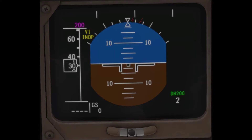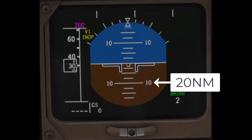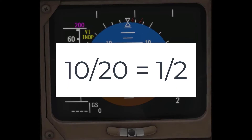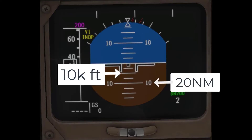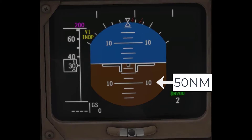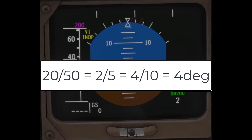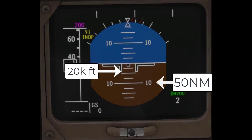For example, if we had 20 miles to our destination and needed to lose 10,000 feet, I'd put 20 nautical miles on the 10-degree nose low reference. Then 10 over 20 as a fraction becomes one half, which means 10,000 feet goes on the 5-degree nose low reference. I just calculated that to descend 10,000 feet in 20 nautical miles, I need a 5-degree pitch change. Likewise, if I had 50 nautical miles and needed to lose 20,000 feet, two-fifths is about 40%, meaning I need a 4-degree pitch change.